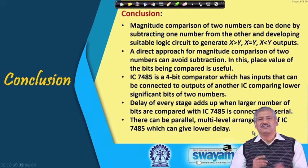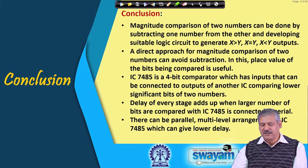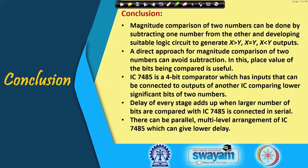In conclusion, magnitude comparison of two numbers can be done by subtracting one number from the other and developing suitable logic. The ALU does it that way without a separate comparator circuit. A direct approach for magnitude comparison uses the place value of bits — if more significant bits differ, the decision can be made directly. IC 7485 is a 4-bit comparator with cascade inputs for connecting to other ICs. Delay adds up in serial connection, but a parallel multi-level arrangement is possible. Thank you.